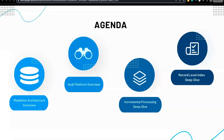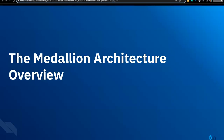For the agenda, we'll have an overview of the medallion architecture platform and the Apache Hudi platform. Next we'll cover the incremental framework with the CDC feature and how you can achieve fast updates and merges with Hudi's record-level index. Finally we'll do a walkthrough of how you can build a Customer 360 app using the incremental processing framework within Hudi to build an efficient medallion architecture.